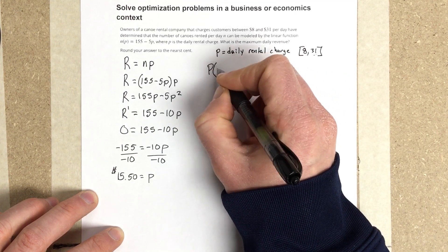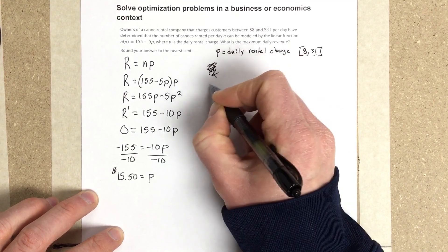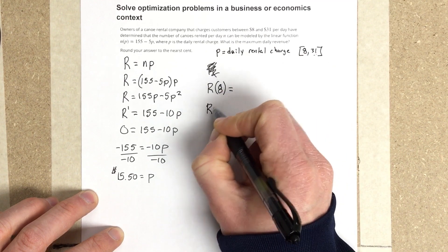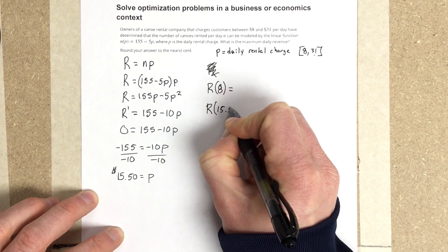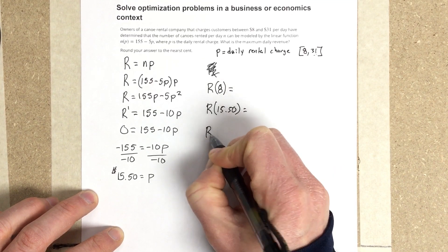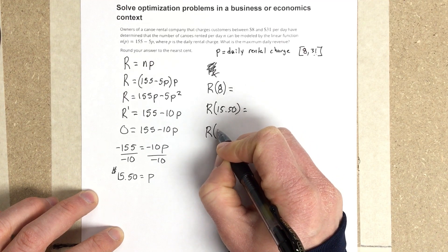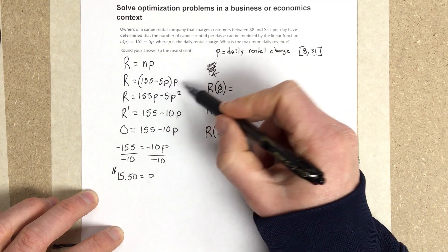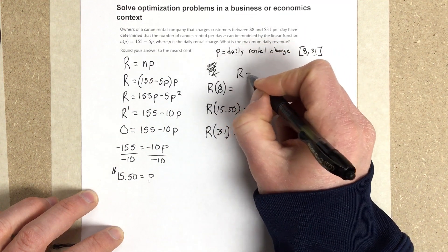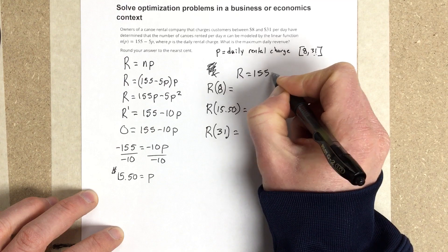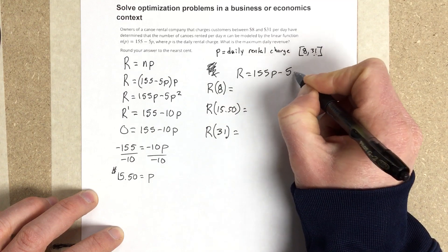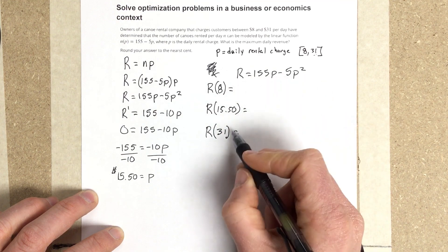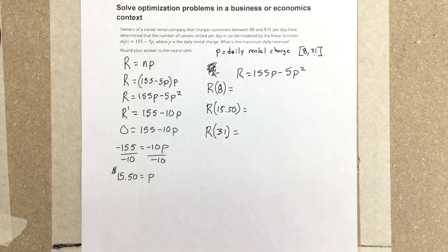So we're going to say R of 8, R of 15.50, and R of 31, and we've got to figure out which one of these maximizes the revenue. So we use this equation, the R equation was 155P minus 5P squared, and so we're going to plug in 8, 15.5, and 31. I'm going to use a calculator to do this.